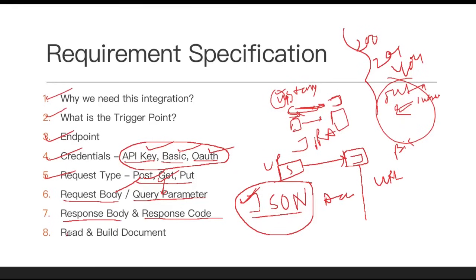One more important thing is to read and build documentation. For example, if you are connecting to Jira or Google Drive, you can go through the documentation to understand what steps are required — endpoint, credential, request format — without needing to contact their technical team. Similarly, once you build your integration, you should also write good documentation so that third parties can connect without coming back to you.